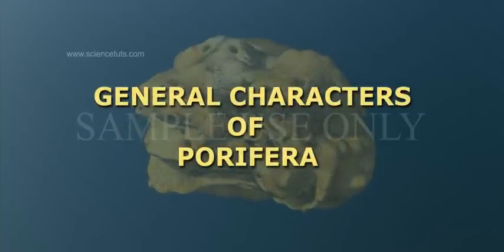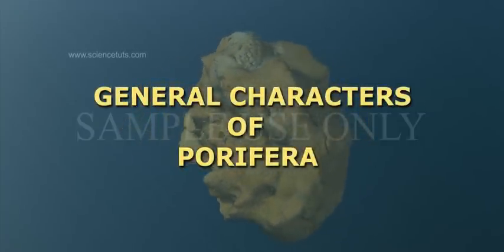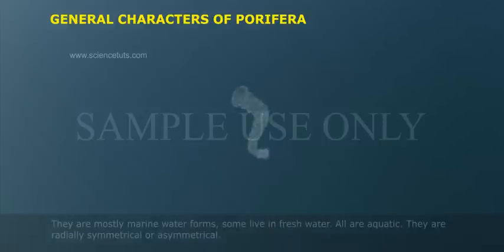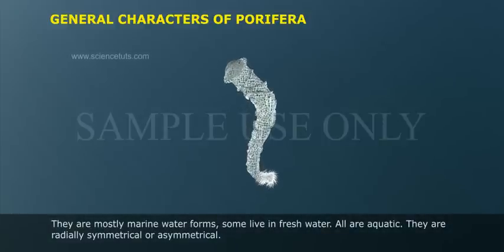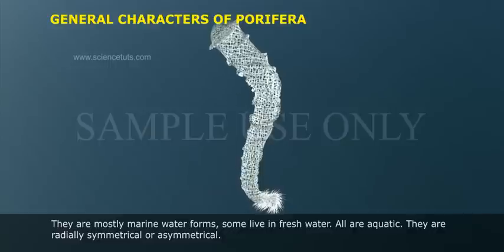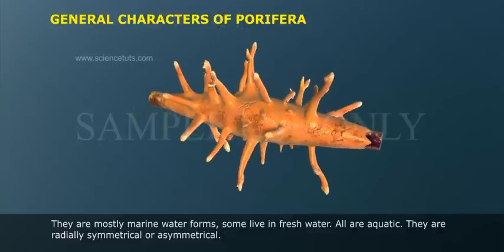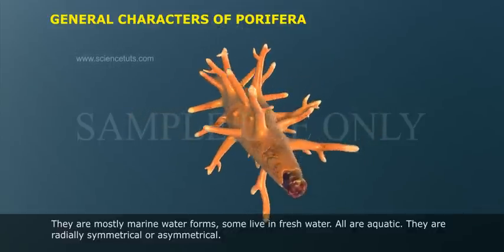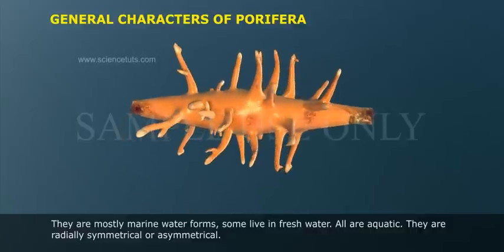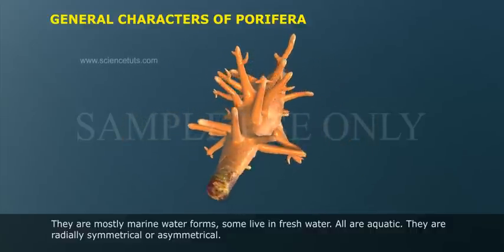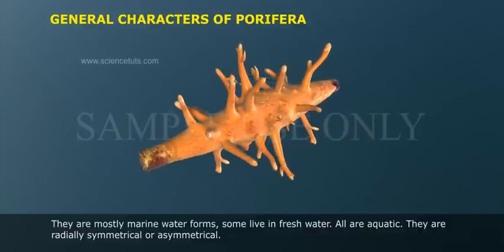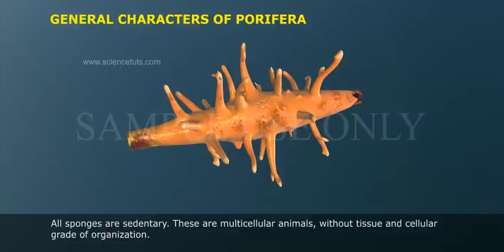General characters of Porifera: They are mostly marine water forms, though some live in fresh water. All are acoelomate. They are radially symmetrical or asymmetrical. All sponges are sedentary, and these are multicellular animals without true tissue, having a cellular grade of organization.